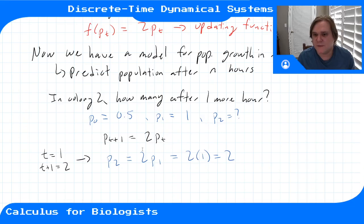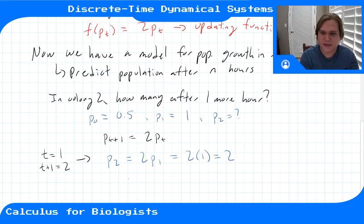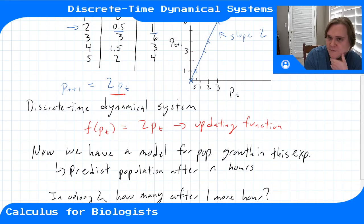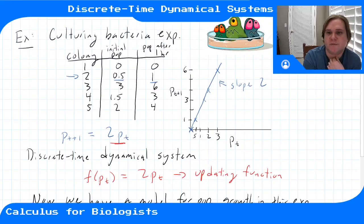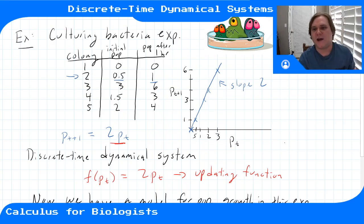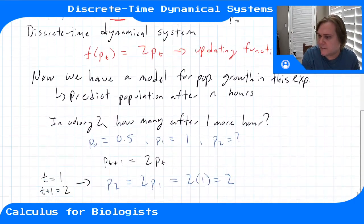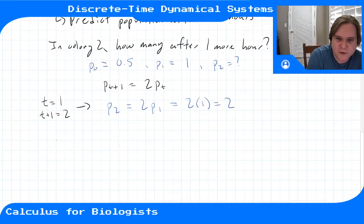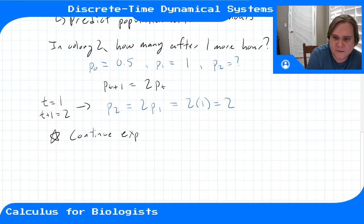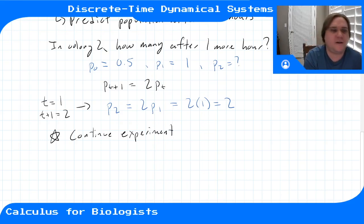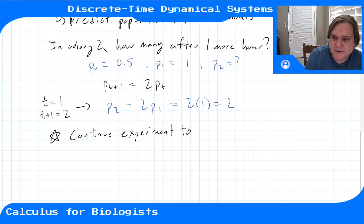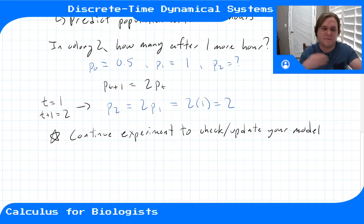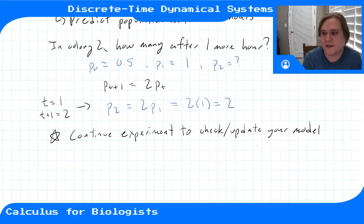By repeatedly applying this formula, we can predict the population after any number of integer hours. The key thing is we've based all this on data — we did a bunch of different colonies, measured the population at one time and then an hour later, and now we're using that to predict for all time. But if we were actually responsible for building accurate models, you want to continue to experiment. You don't want to just stop and say I have a rule and it's going to follow this rule for all time. It's a continuous process: you make a prediction, gather more data, update your model, make more predictions, and so on.